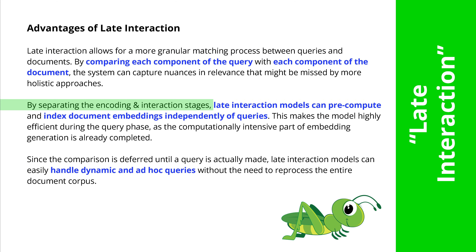What are the advantages of late interaction? This is especially powerful if you're working on a vision-language model that needs a lot of compute infrastructure. By comparing each component of the query with each component of the document, the system can capture nuances and relevance that might be missed by a more holistic approach. We separate the encoding stage and the interaction stage.